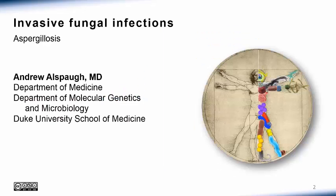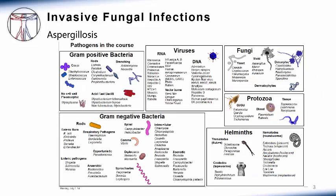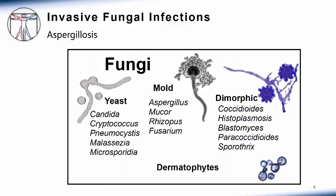This is Andy Alspaugh from Duke University School of Medicine. In this presentation, we are going to consider infections due to the Aspergillus group of fungi. The fungi primarily exist in either a round, yeast-like form or a filamentous mold form. We will focus on Aspergillus as the most common cause of mold infections in humans. These infections are exceedingly important to recognize because they can result in high mortality among our most immunosuppressed patients. Invasive fungal infections can also be quite difficult to diagnose and must be approached with a high index of suspicion in the right patient population.